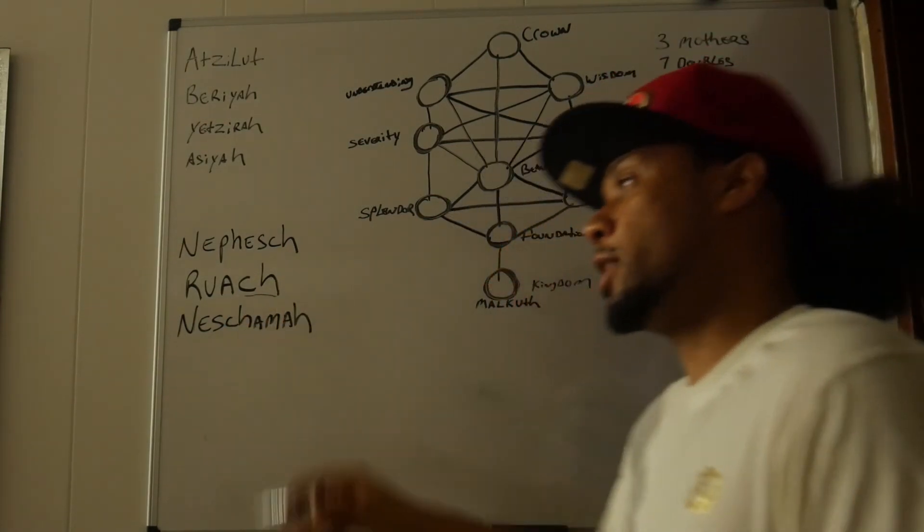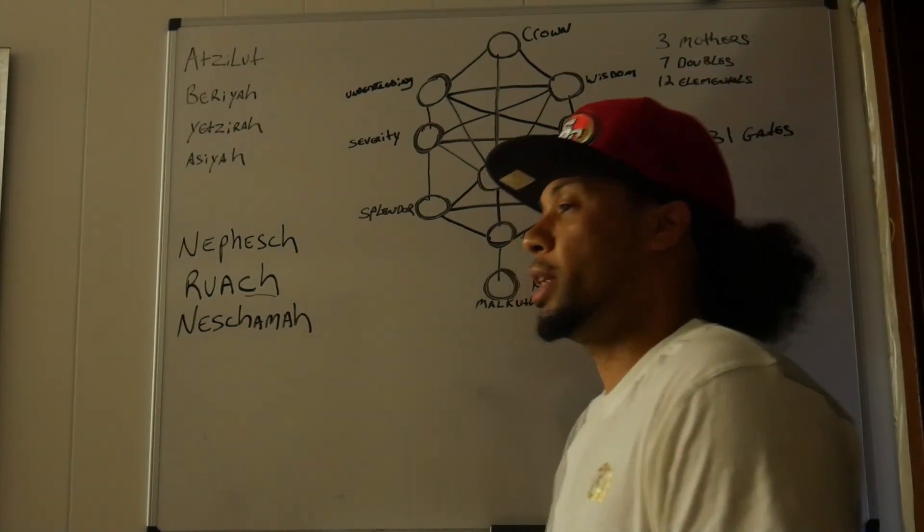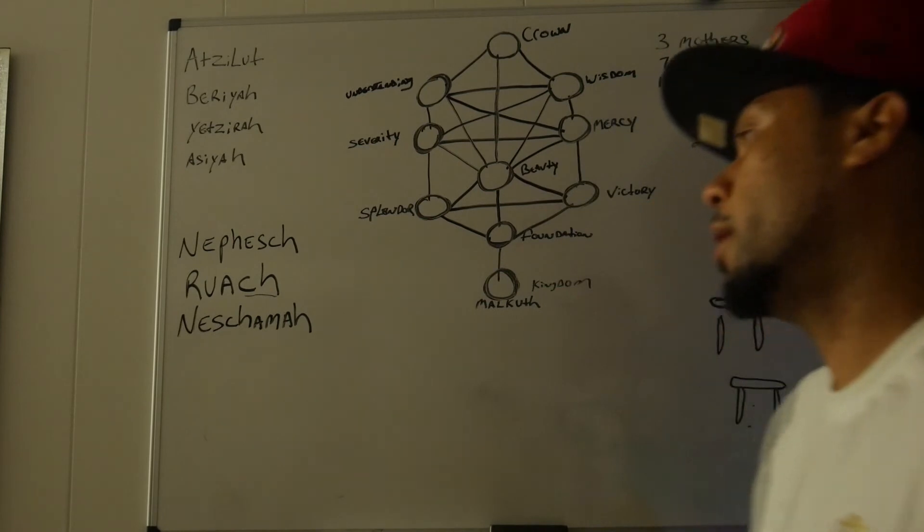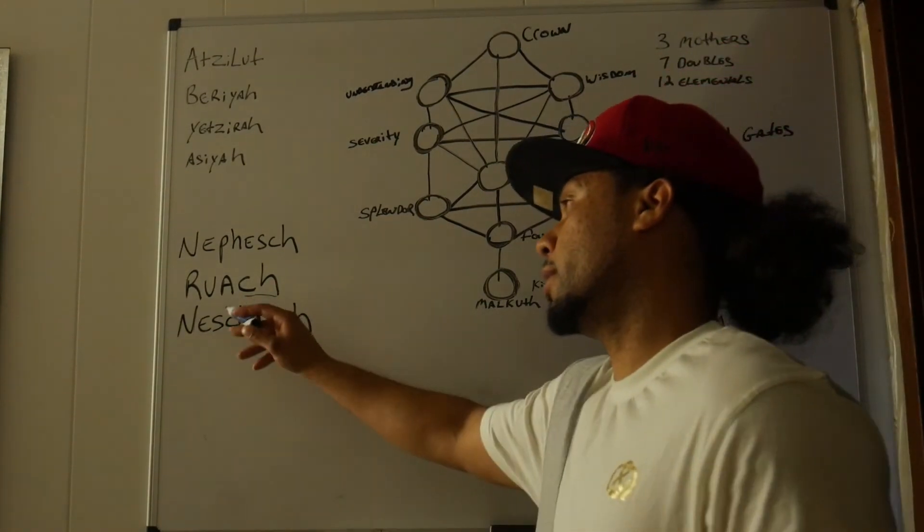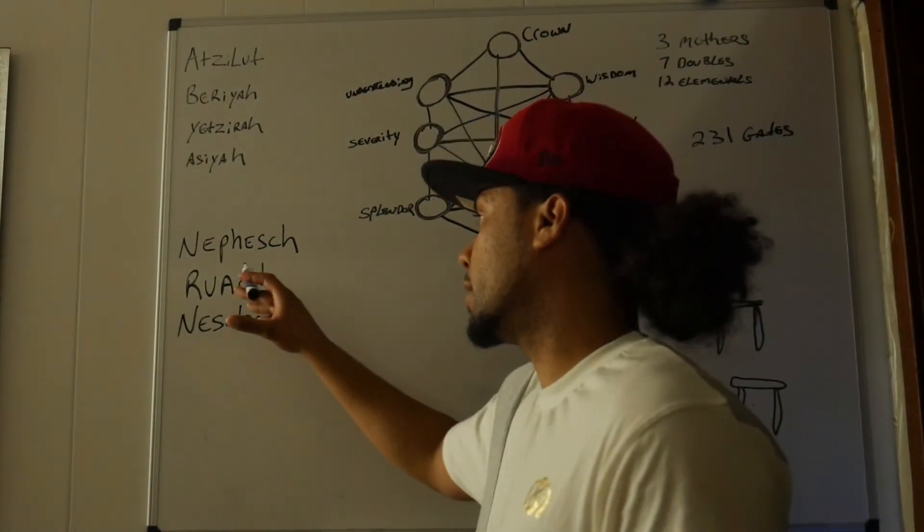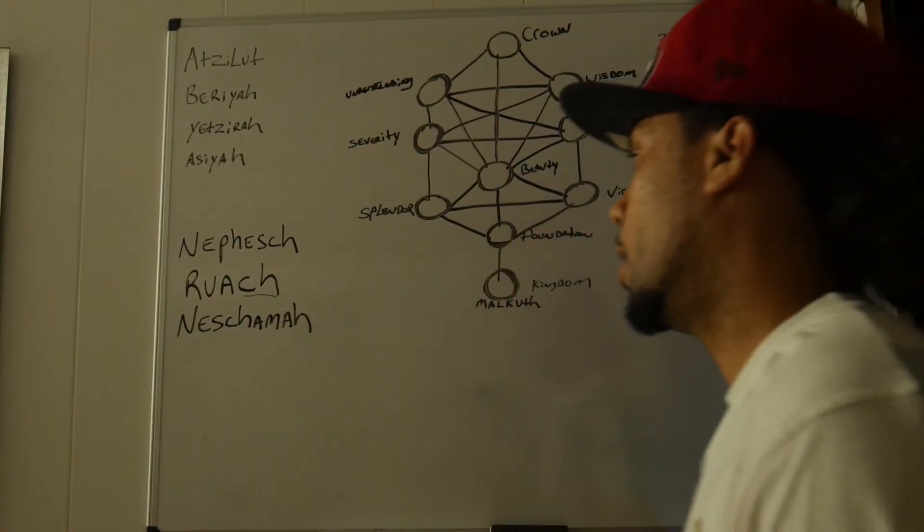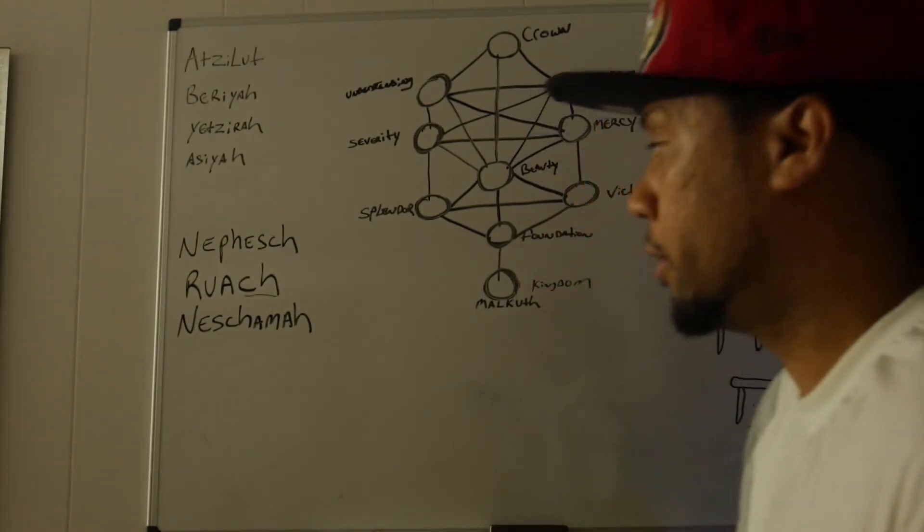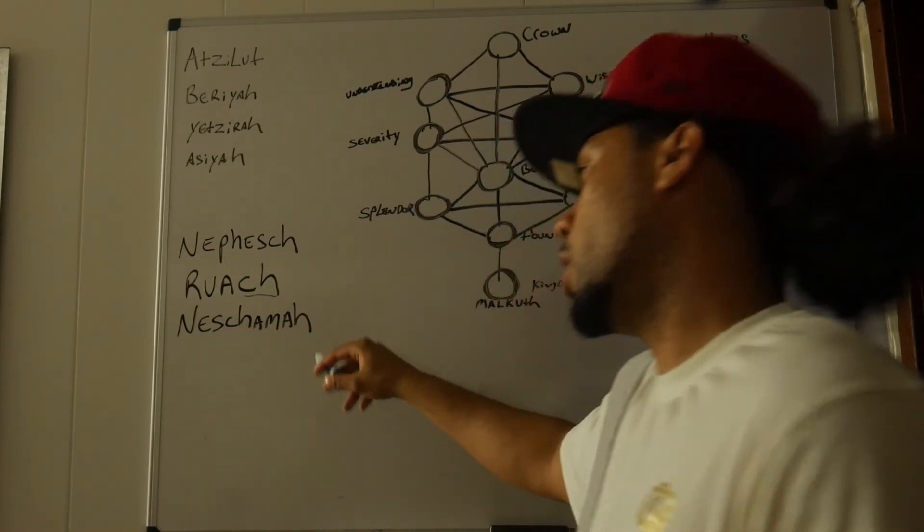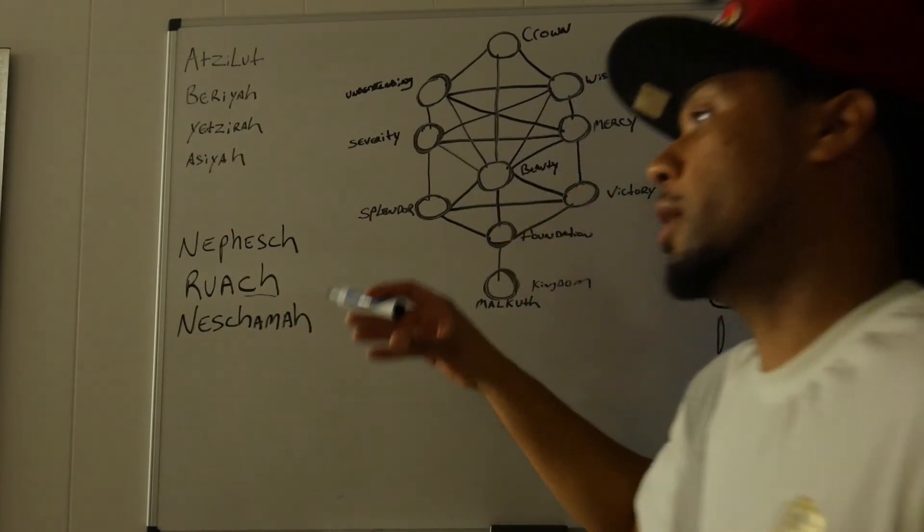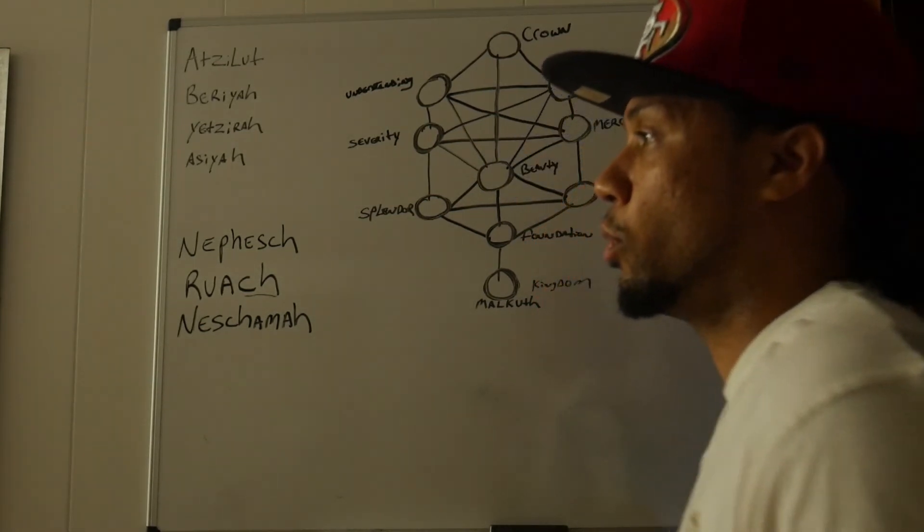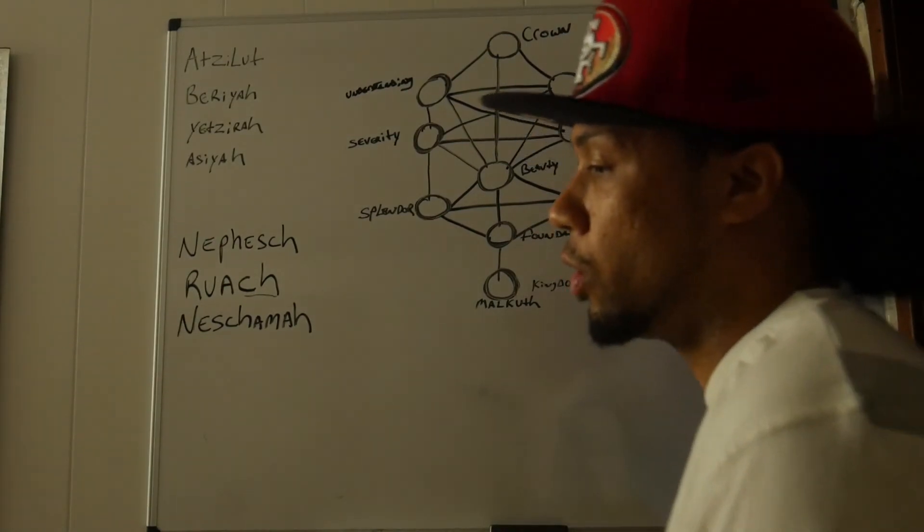Then you have Ruach, which is a higher aspect of the soul, which pertains to basically the mental body. And Ruach, basically, which is air also, basically distributes information from the lower to the higher, right? Because it's in the middle. You know, you got the lower aspect of the soul, and you got Neshama, which is the higher aspect of the soul. So Ruach delivers the information. That's the aspect of the soul that is the connecting point that makes everything coherently work.